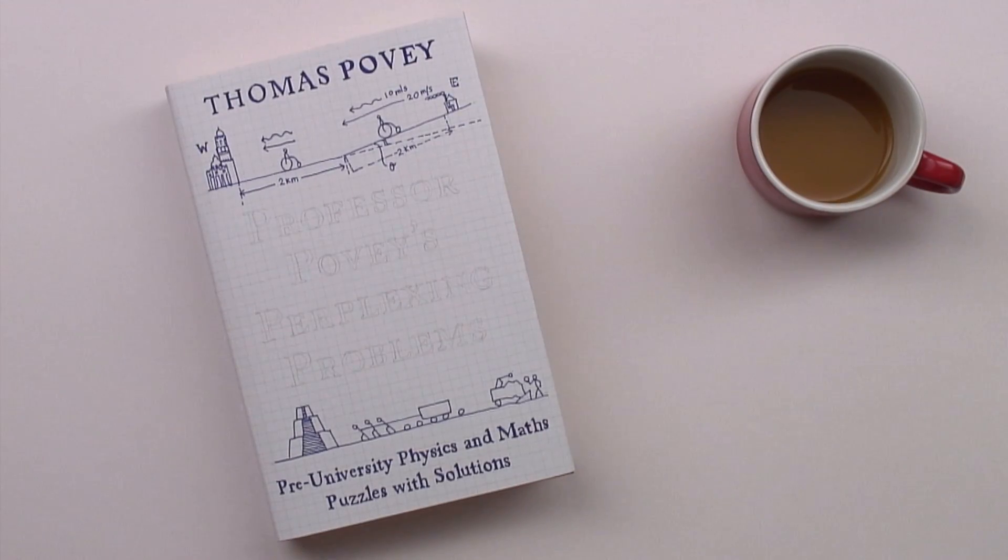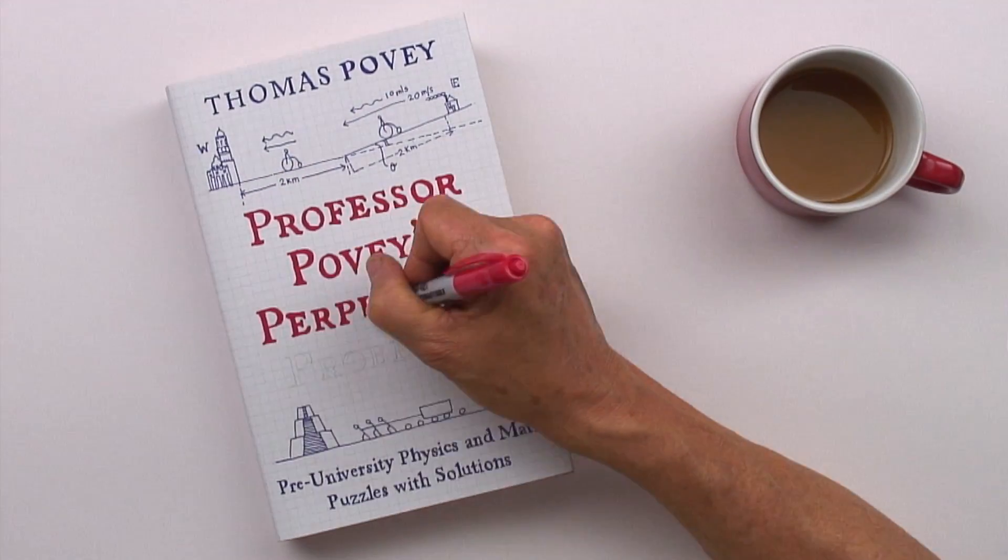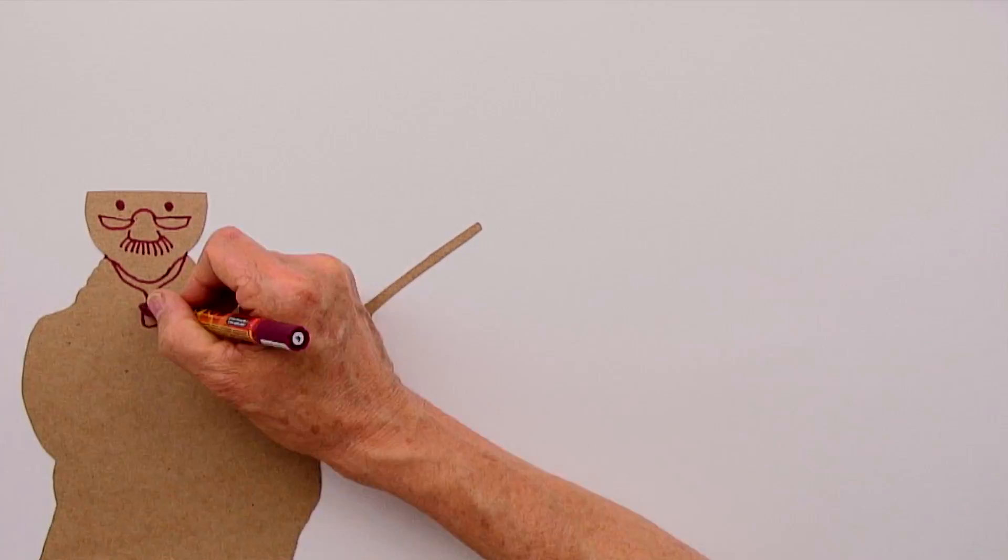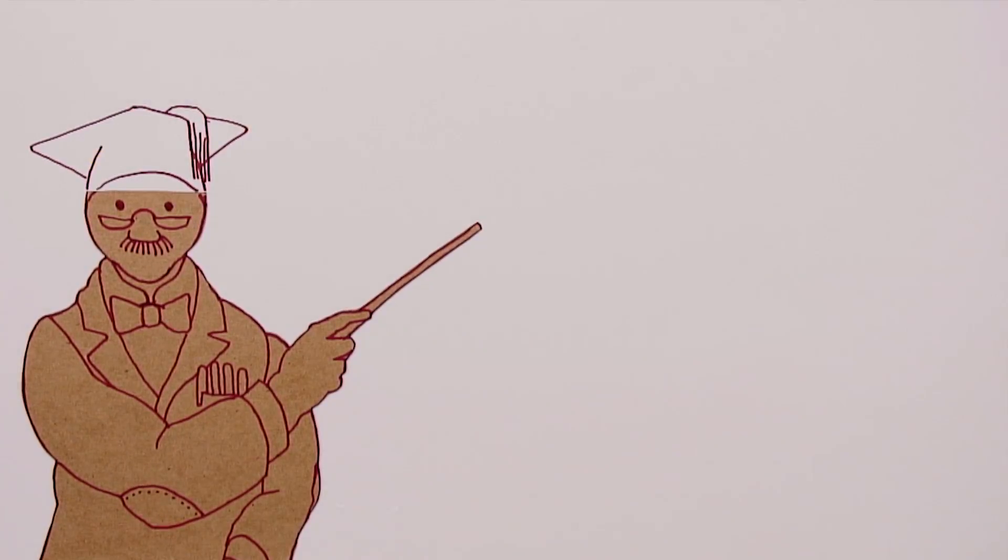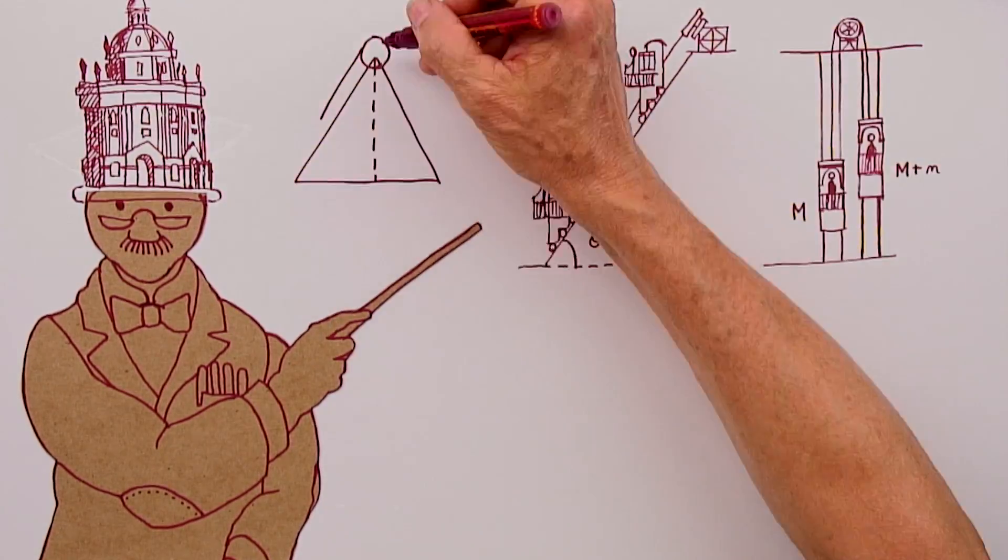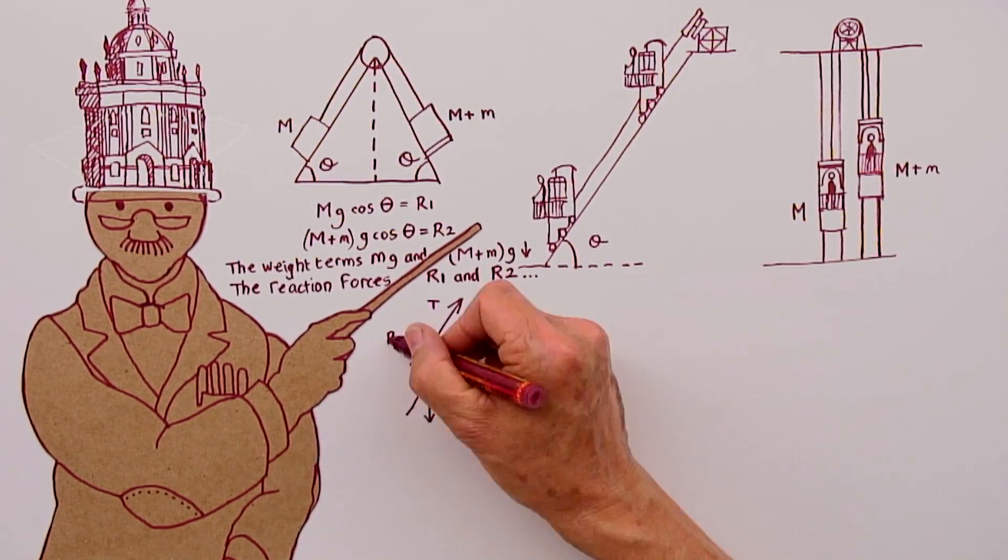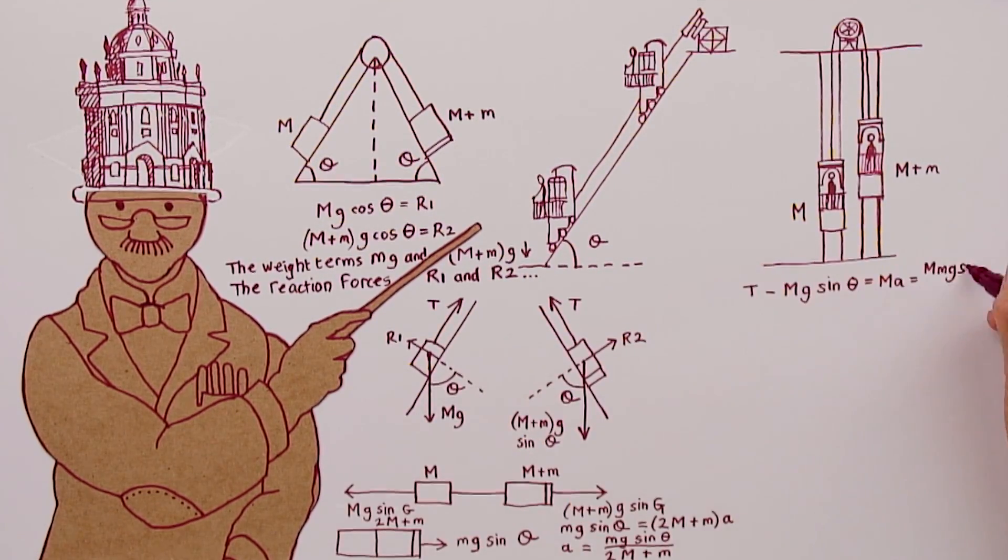I'm Thomas Povey and my book is called Professor Povey's Perplexing Problems. I'm a professor at Oxford University and I've been a puzzle enthusiast for as long as I can remember. This book is a collection of my favourite puzzles in physics and maths.